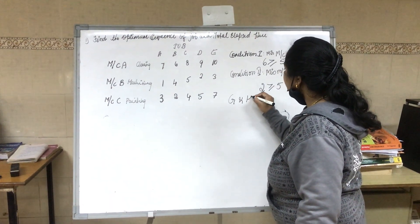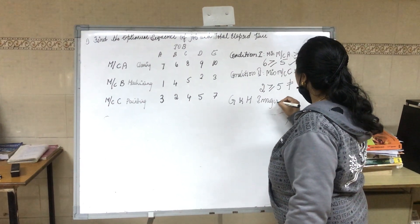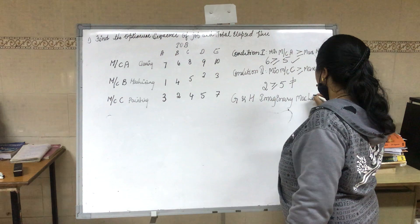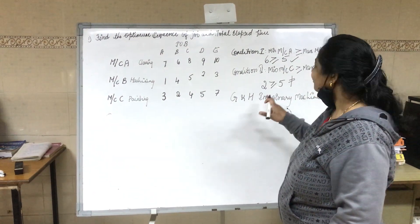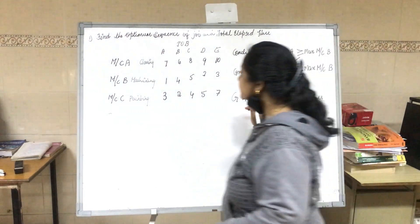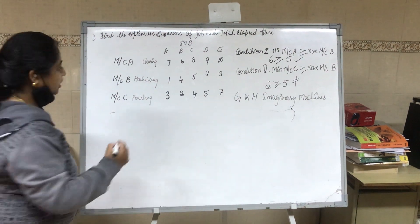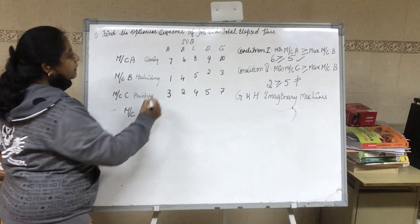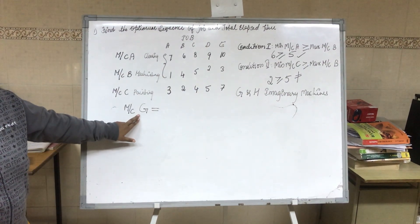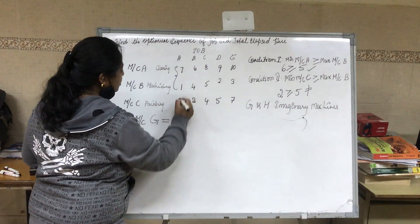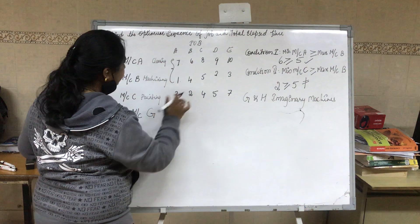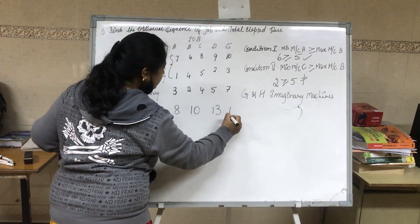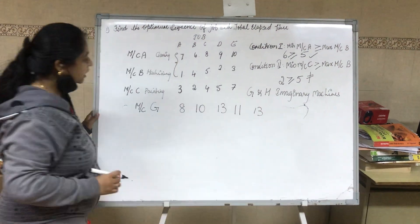We are going to create two fictitious or imaginary machines, G and H. Machine G equals machine A plus machine B. So: 7+1=8, 6+4=10, 8+5=13, 9+2=11, 10+3=13. We now have the machine G values.